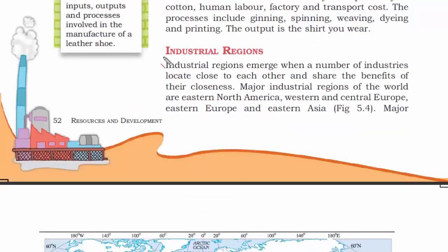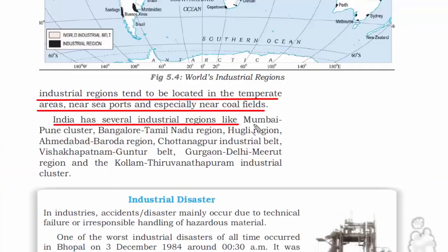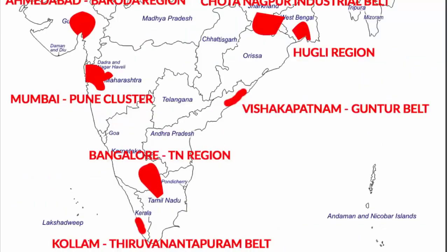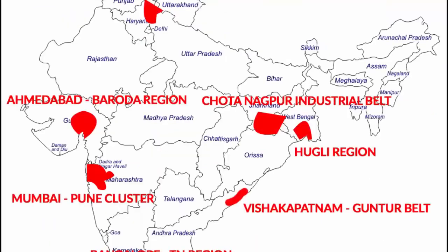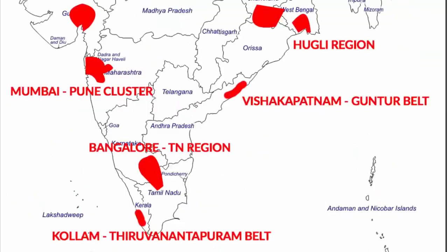Industrial region is a place where a number of industries locate close to each other and share the benefits of their closeness. Some of the industrial regions of the world are Eastern North America, Western and Central Europe, Eastern Europe, and Eastern Asia. Some of the industrial regions in India — I'll put all of this in a map — are Mumbai-Pune cluster, Bangalore-Tamil Nadu region, Hooghly region, Ahmedabad-Baroda region, Chhota Nagpur industrial belt, Vishakhapatnam-Guntur belt, Gurgaon-Delhi-Meerut region, and Kollam-Thiruvananthapuram industrial cluster.